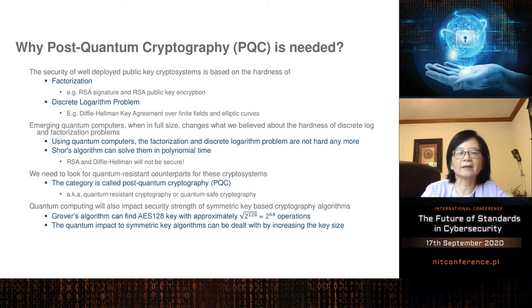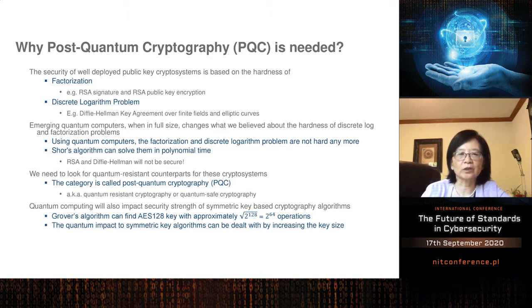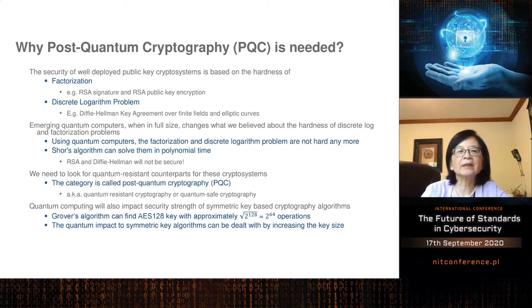People may ask: will quantum computers impact symmetric key-based cryptography? The answer is yes, but in a very different way. The complexity becomes the square root. For AES-128, the complexity is not 2 to the 128 but 2 to the 64 by Grover's algorithm to search the AES key. Therefore, for Post-Quantum Cryptography, we are currently focusing on public key cryptography.